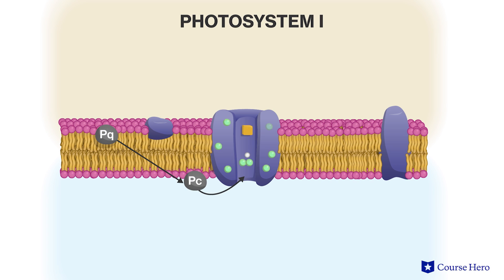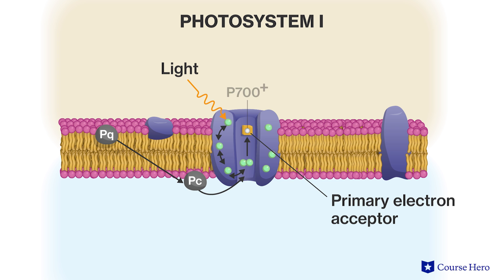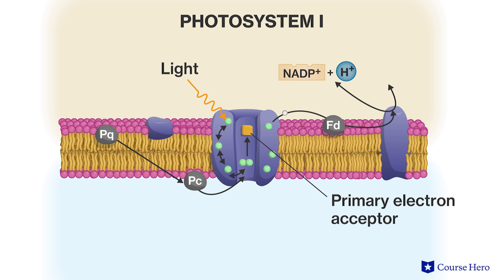In photosystem I, a process similar to that in photosystem II captures light energy and transfers it to a primary electron acceptor. The reaction center chlorophyll molecules in photosystem I are referred to as P700, because they most effectively absorb light having a wavelength of 700 nanometers. Light energy is transferred to the reaction center, exciting an electron in the P700 pair of chlorophyll molecules, which gets passed on to the primary electron acceptor. P700 is now referred to as P700+, and it can accept electrons that come from photosystem II. The excited electrons from the primary electron acceptor of photosystem I are then passed in a series of redox reactions to NADP+, which also takes hydrogen ions from the stroma to make NADPH. NADPH will be used later in the Calvin cycle.